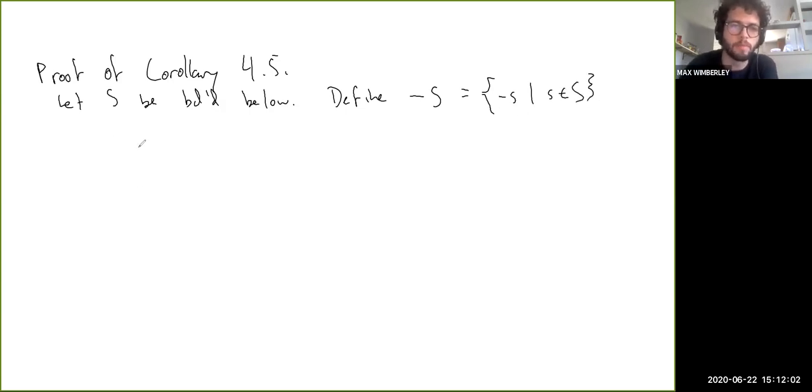Define -S to be the set of all the negatives of numbers in S. The book has a really nice diagram here. I'll do my best to kind of reproduce it. Basically, if you imagine here's zero, and there's some numbers that you include, and it's bounded below, then when you take -S, you're literally just reflecting it across zero.